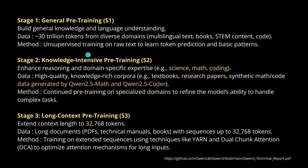Stage two is knowledge-intensive pre-training, focusing on reasoning and domain-specific expertise in science, mathematics, and coding. They used a lot of data from knowledge-rich corpora, plus data generated by QwQ 2.5 Math and QwQ 2.5 Coder, bringing all the data together for continued pre-training on specialized domains important for the reasoning process.